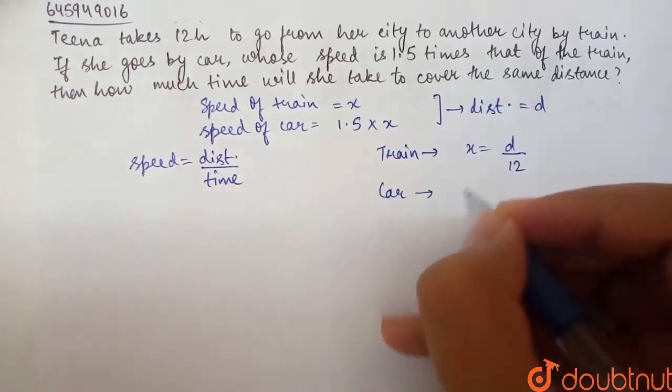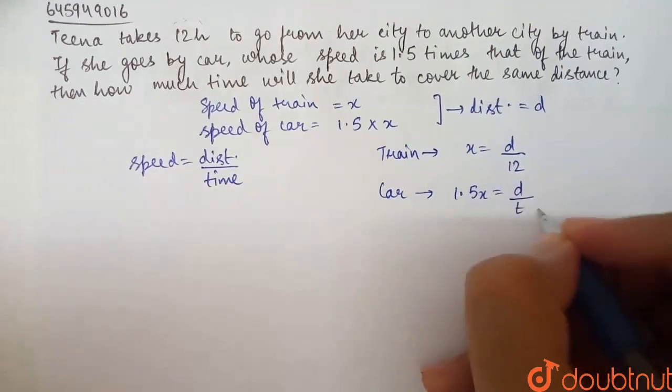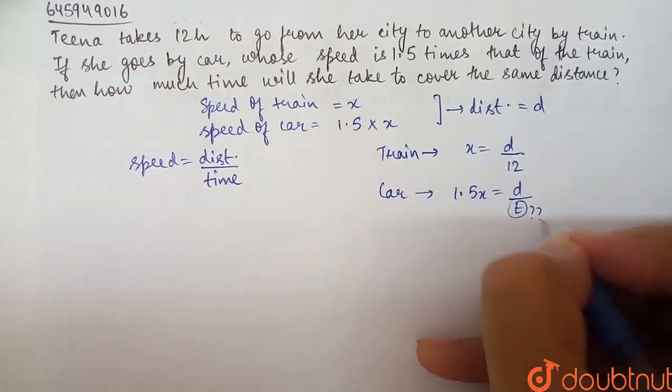Now, if we talk about the car, what is speed? It's 1.5X. And distance is equal to D. We have to find the time. Basically, this is our unknown.